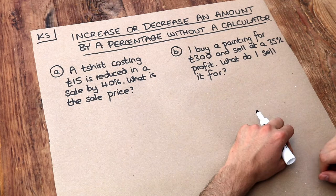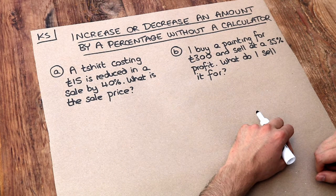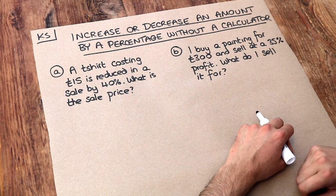So we've got this first problem here: a t-shirt costing £15 is reduced in a sale by 40%. What is the sale price?